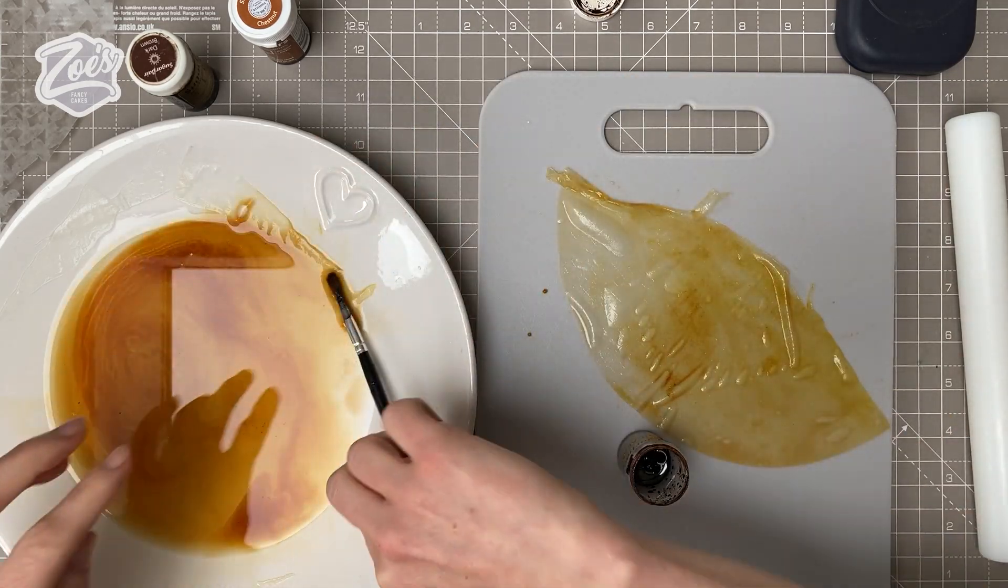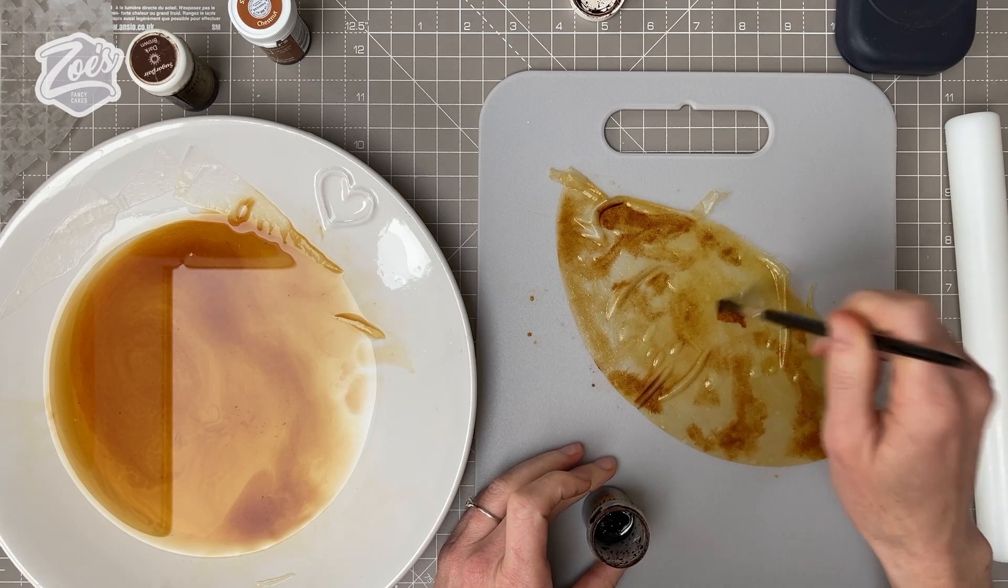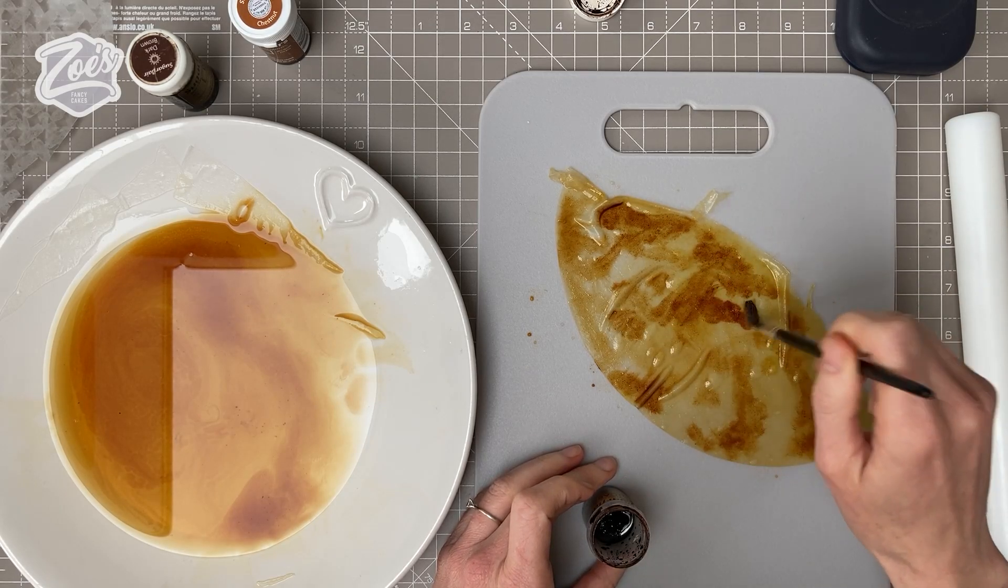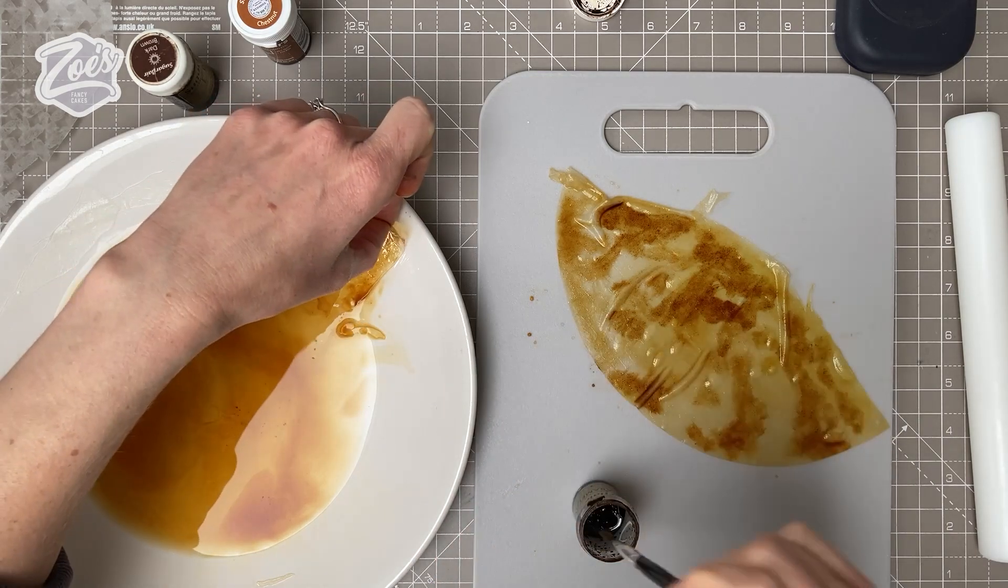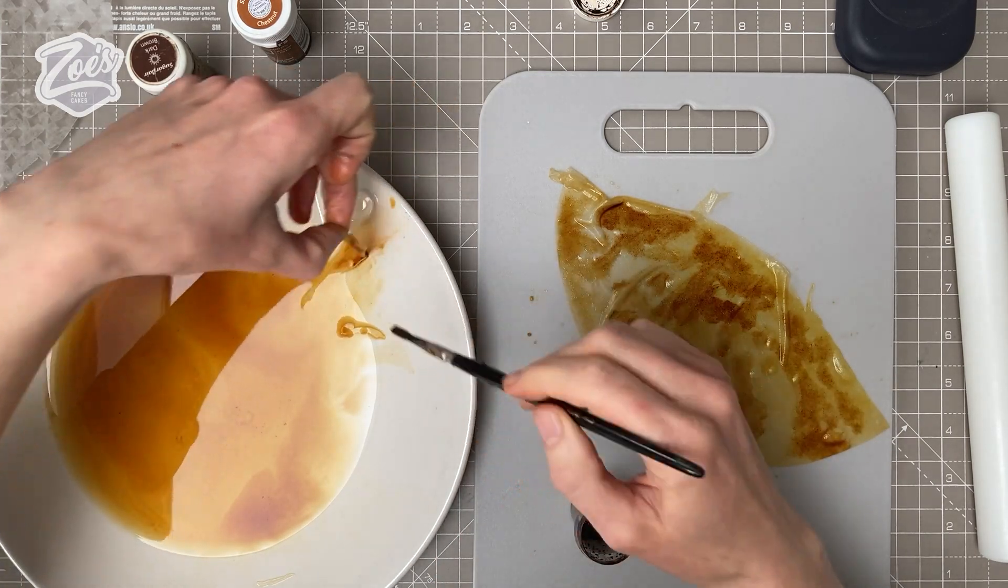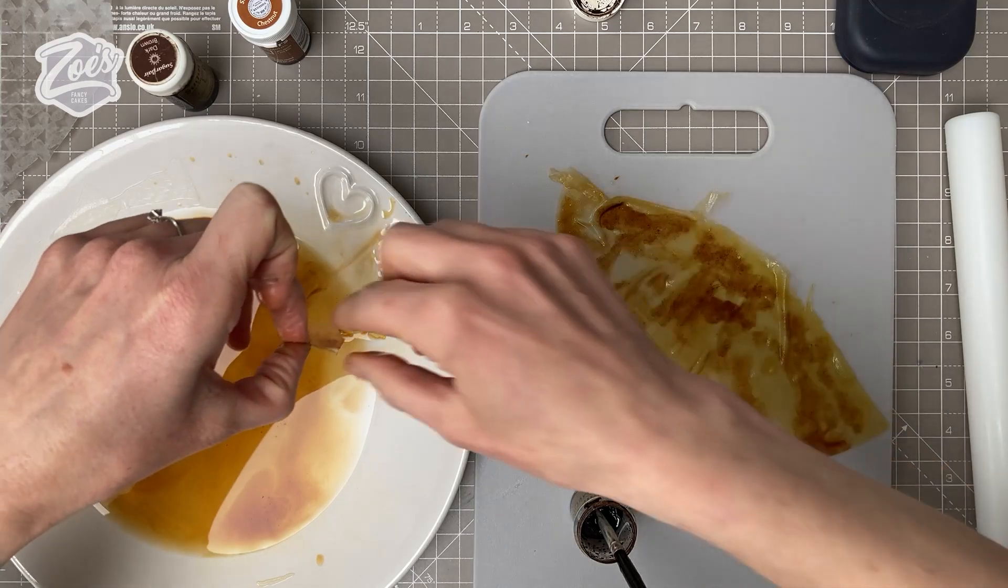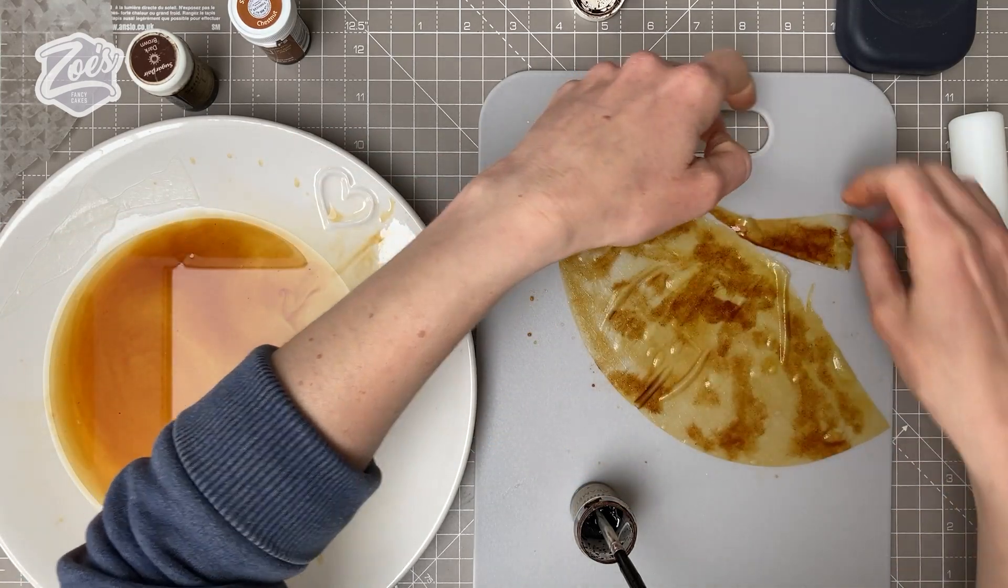When it dries out it won't stick to it. I'm darkening the edges with a bit of food coloring. Let's dab it on all over. When the rice paper dries, it tends to look a tiny bit darker. Have a bit of a play around with scrunching your pieces around.